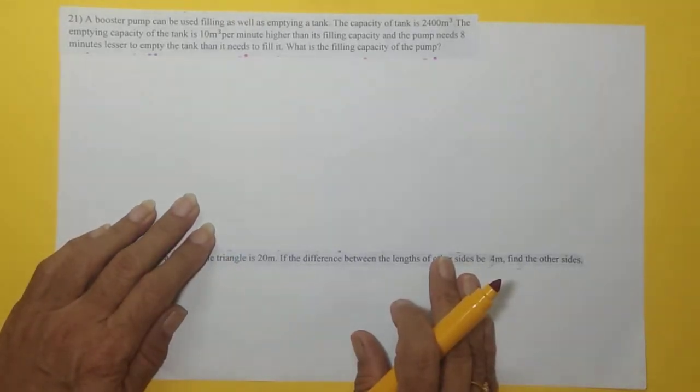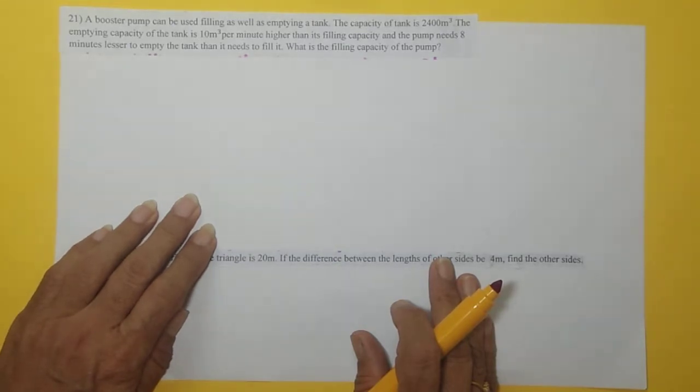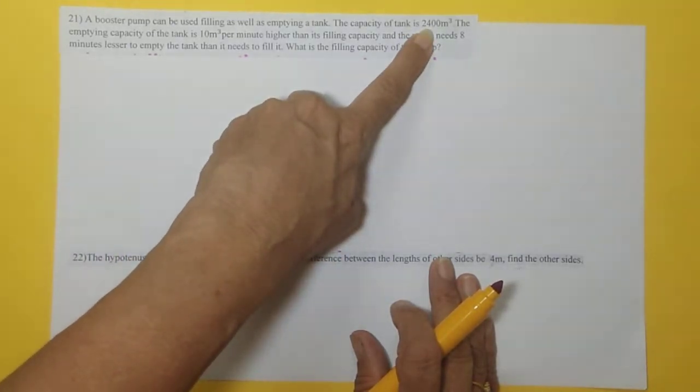Question 21. A booster pump can be used for filling as well as emptying a tank. The capacity of the tank is 2400 meter cube.